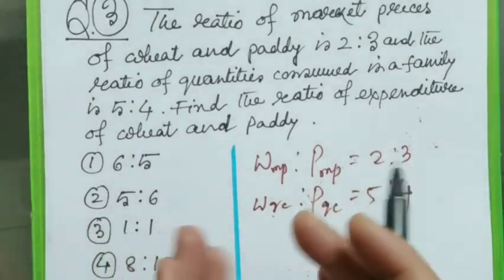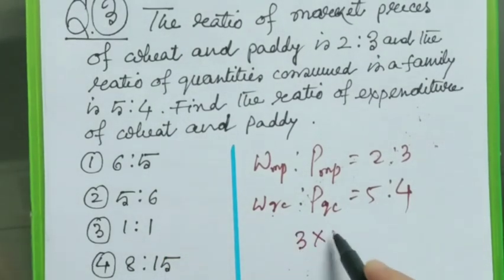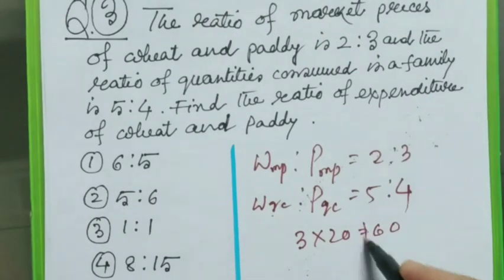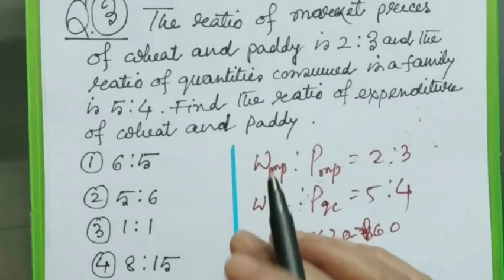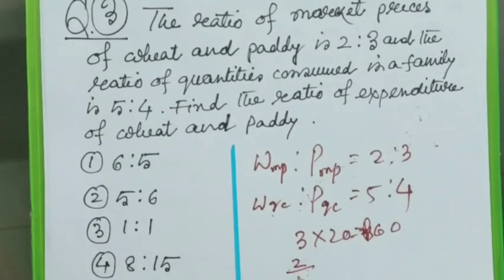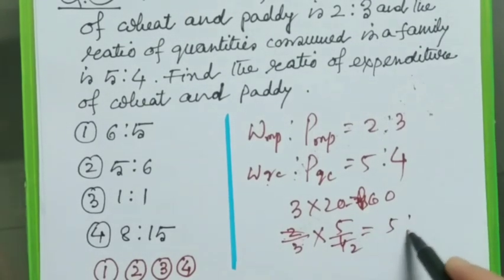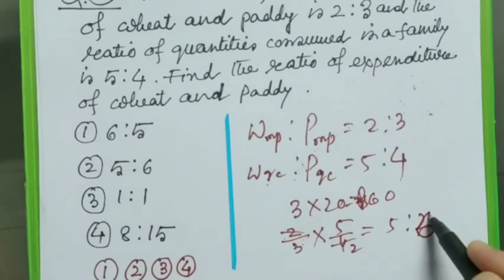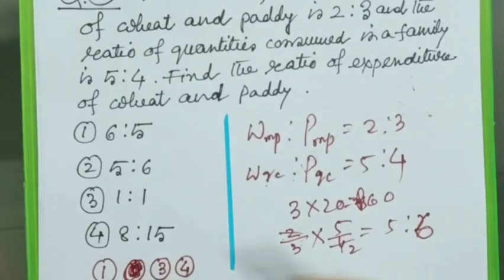Now we know price into quantity is equal to expenditure. If we buy 3 kg of anything with rupees 20 per kg, then 3 into 20, that means 60 will be our total expenditure. Isn't it? So now, as we have to find out the ratio of expenditure, it becomes quite easy for us. We will just multiply the ratio of price and quantities. So here ratio, that means 2 by 3 into 5 by 4. This is equal to 10 by 12. That means 5 is to 6. That means our 2 is the correct option. So I will bubble answer 2.